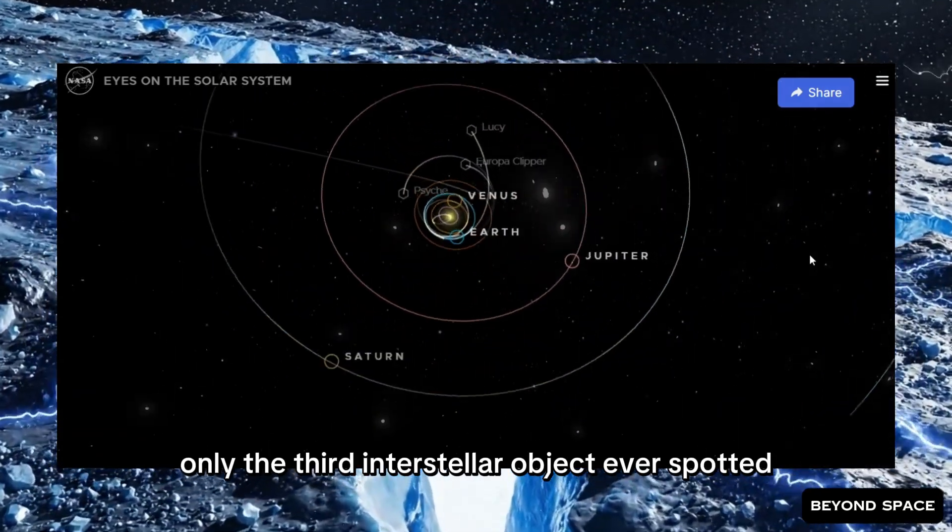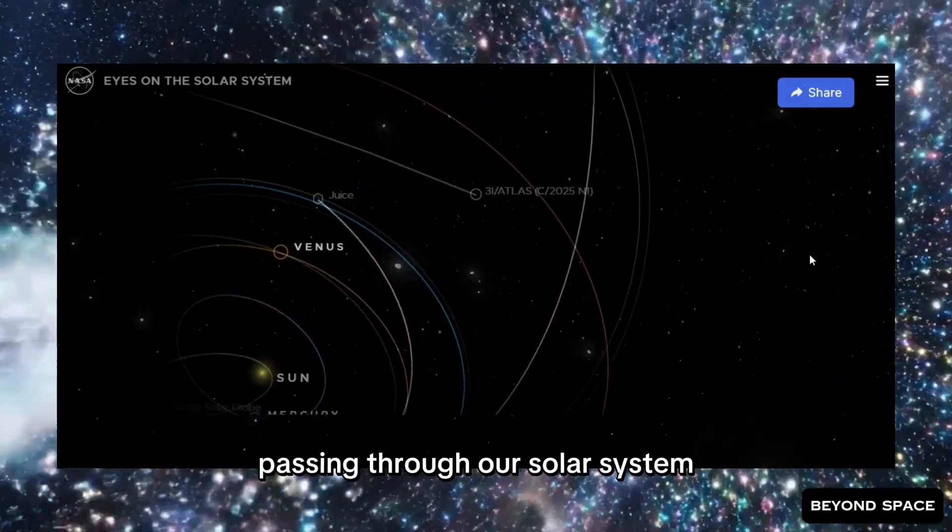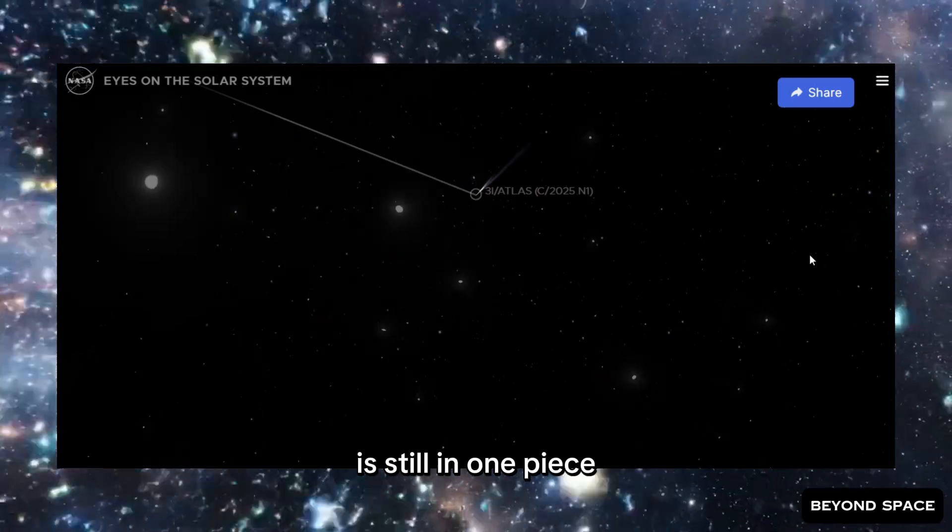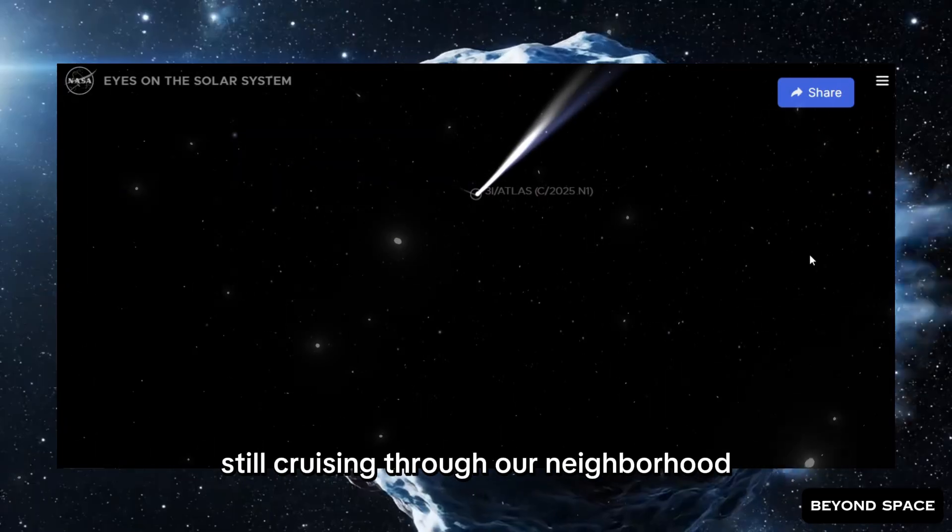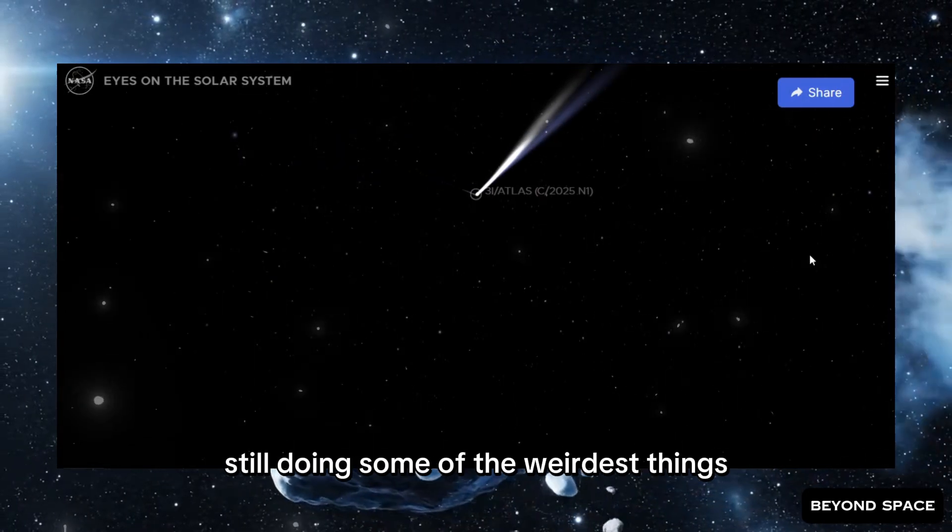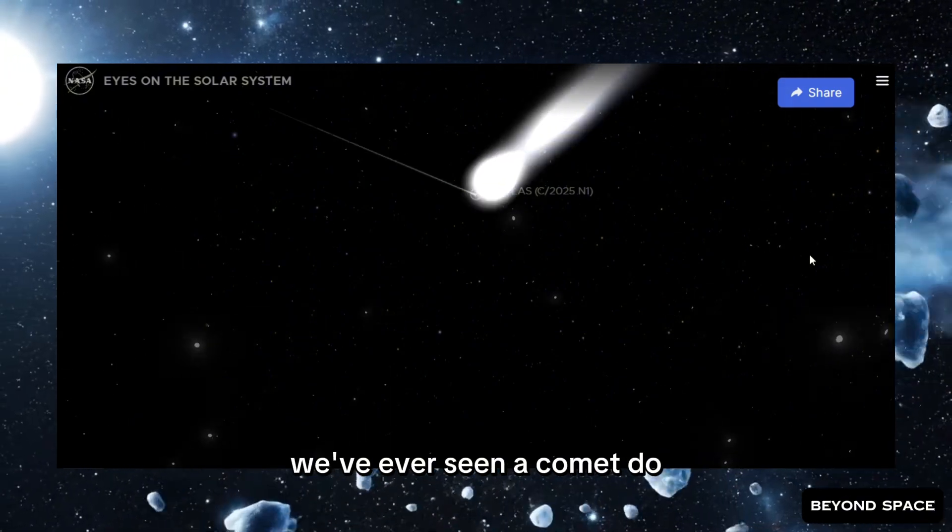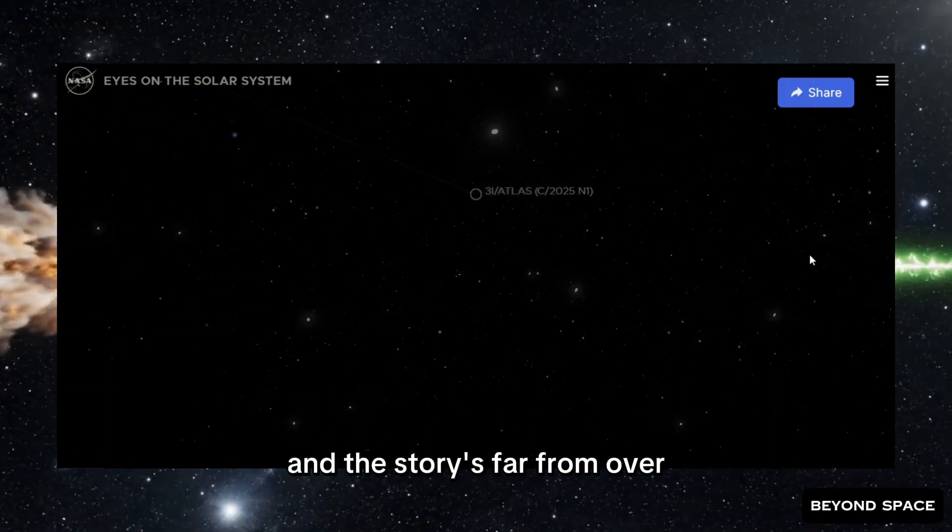This comet, only the third interstellar object ever spotted passing through our solar system, is still in one piece. Still cruising through our neighborhood. Still doing some of the weirdest things we've ever seen a comet do.